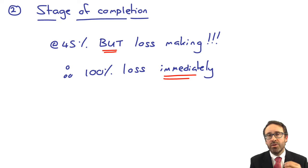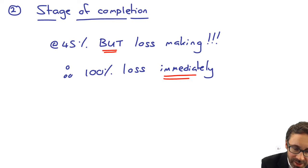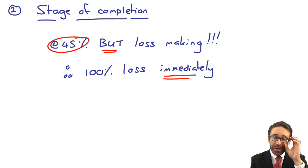If it's a loss-making contract, you recognize that loss immediately 100% in full. If it is profitable, you then recognize it based upon that stage of completion, based upon either your input or your output method. As we're seeing in these questions, we've been given the percentage. It makes life a little bit easier.